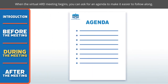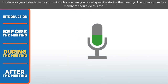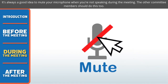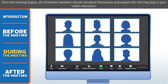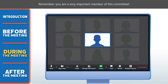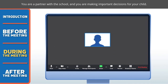When the virtual ARD meeting begins, you can ask for an agenda to make it easier to follow along. It's always a good idea to mute your microphone when you're not speaking during the meeting — the other committee members should do this too. Once the meeting begins, all committee members should introduce themselves and explain the role they play in your child's education. Remember, you are a very important member of this committee. You are a partner with the school, and you are making important decisions for your child.